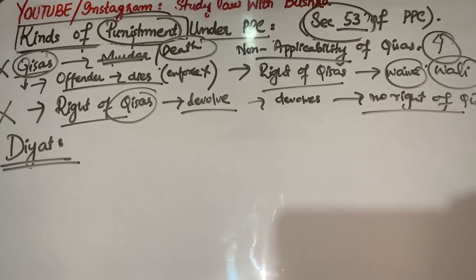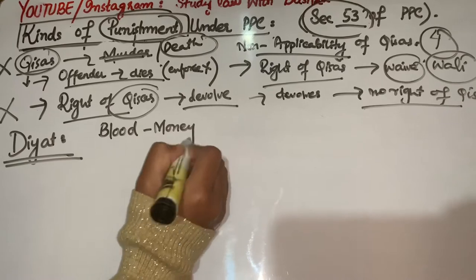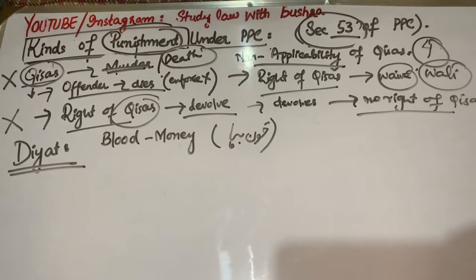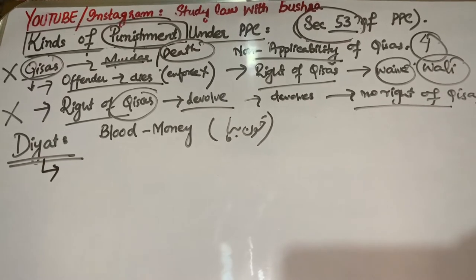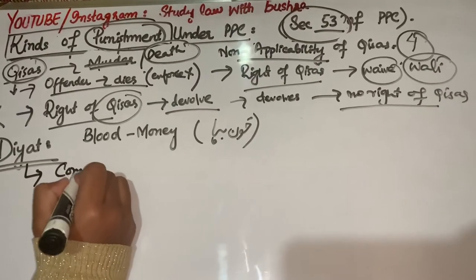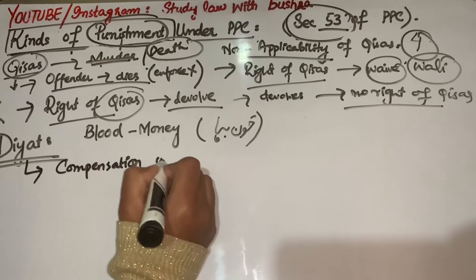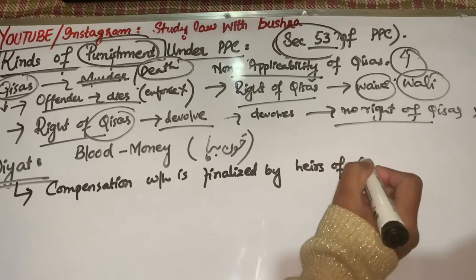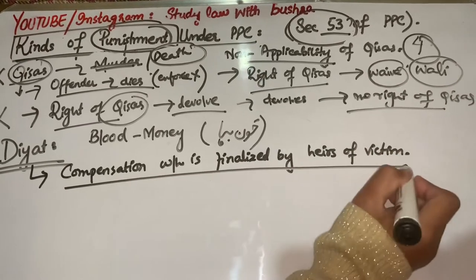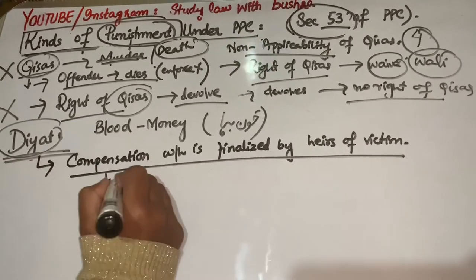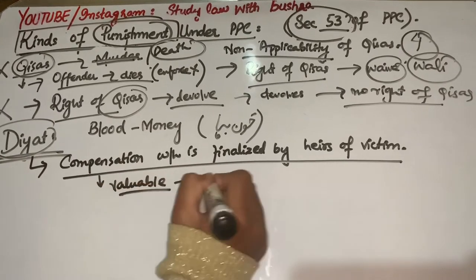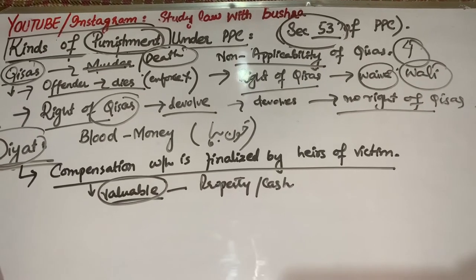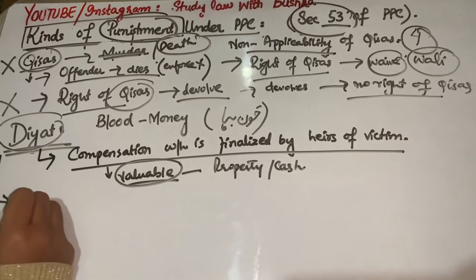Next hamare paas Diyat. Diyat ka matlab kya hai — blood money, khoon baha isko hum kehte hain. Diyat ka meaning hai: compensation which is payable to the heirs of the victim by the offender in bloodshed. Aur yeh jo compensation hai, yeh finalize karte hain heirs of victim. Victim ke legal heirs jo hain, woh compensation finalize karte hain, toh victim ke heirs ko convict ki taraf se woh compensation grant ki jati hai.